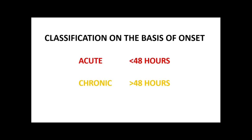Next is the classification on the basis of onset. If it is less than 48 hours duration it is acute hyponatremia, and if it is greater than 48 hours duration then that is chronic hyponatremia. This is very important because it helps us in management — acute hyponatremia can be corrected more rapidly than chronic hyponatremia, and we'll discuss the implications of rapid correction further.